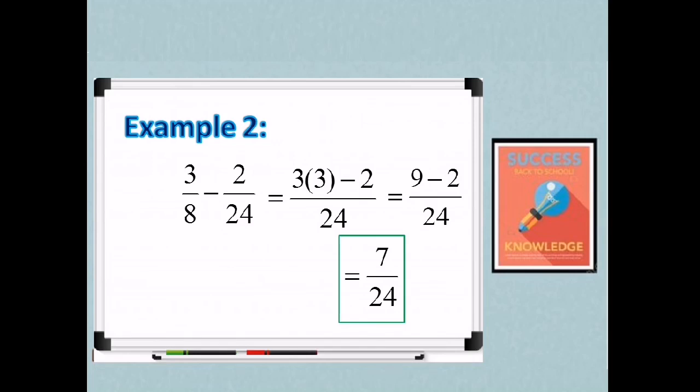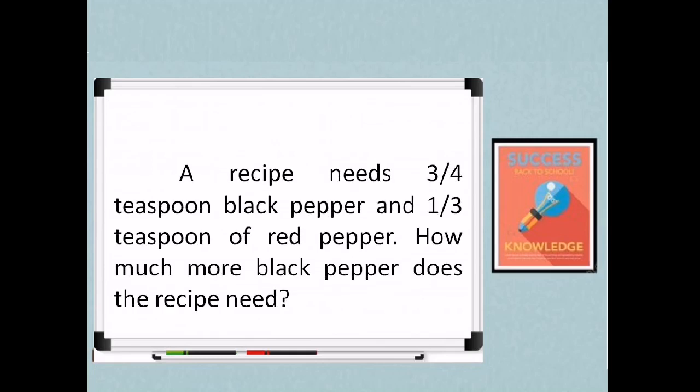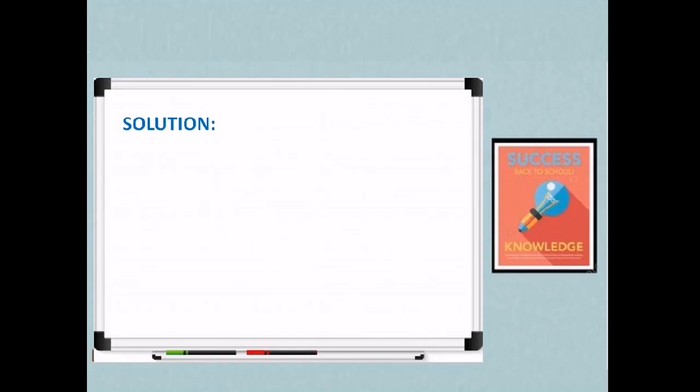So ngayon, ay balikan natin yung kaninang problem dun sa unang part ng video wherein ang involved doon na operation ay subtraction. So you have 3/4 teaspoon of black pepper and 1/3 teaspoon of red pepper. We just subtract. 3/4 minus 1/3. Again, subtracting dissimilar fractions.